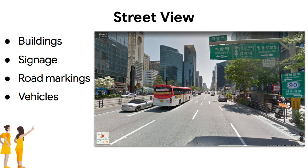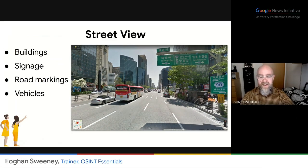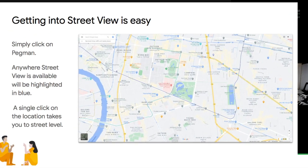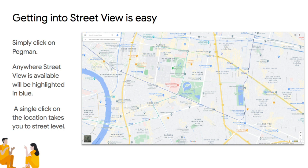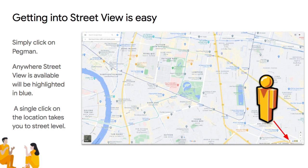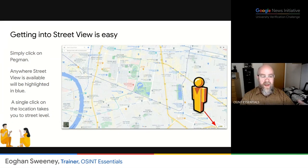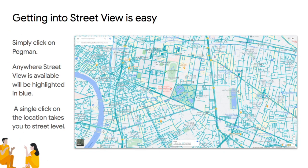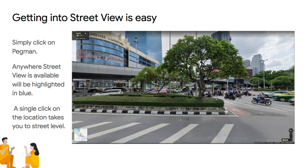We're probably all familiar with Street View. In Street View, it's very useful to be able to look at buildings, street signs, markings on roads, maybe even vehicles, and things like this to enable us to ascertain locations. It's very easy to look at Street View — all you have to do is look down on the bottom right, and you'll see this little figure known as Pegman. If you click on this, anywhere that you can access Street View imagery is highlighted in blue. Once you see that, you can click just once on any location, and that will take you into street level.